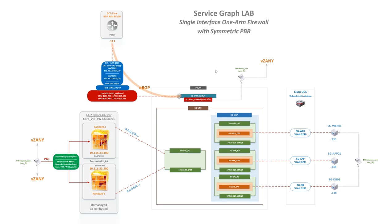We have our SG VRF, SG ANP, bridge domains with default gateways, and our endpoint groups — EPGs for web, app, and database. We also have our Cisco UCS environment. I have different port groups defined on the vSphere environment with VLANs 1240, 1241, and 1242, each with a respective VM mapped to those port groups. These are static bindings — I didn't do the VM integration, although it works the same way.